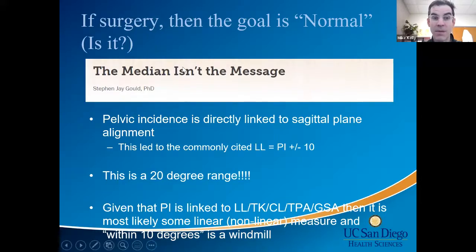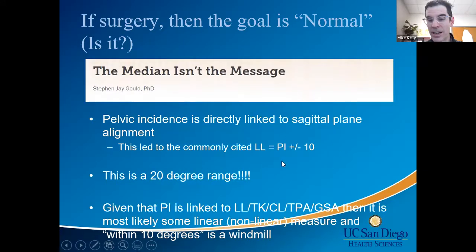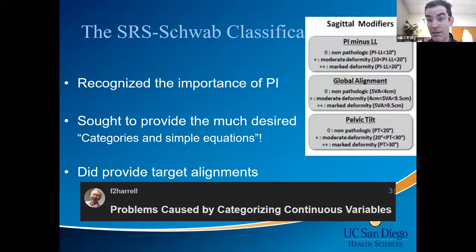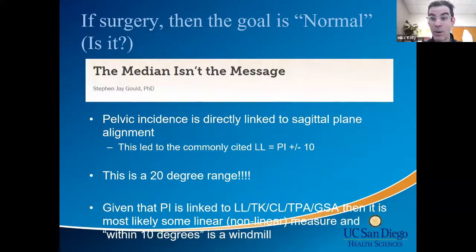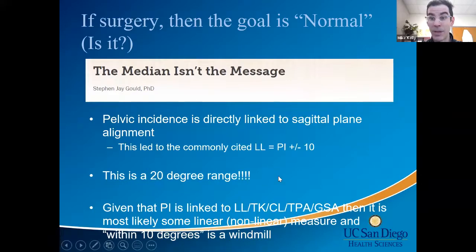Pelvic incidence: Frank Schwab linked it directly to sagittal plane alignment, leading to the very commonly cited PI ± 10 — which is not what he wrote. He wrote PI minus LL is less than 10. He gave you a 10-degree range, not a 20-degree range. It turned into a 20-degree range probably because that makes life easier, makes surgeries easier, reduces blood loss — and makes your outcomes worse, I think.